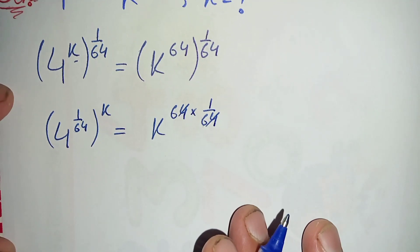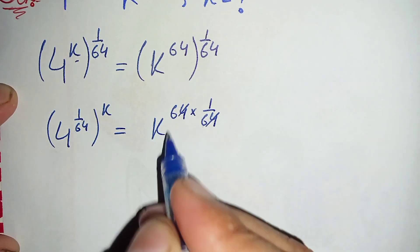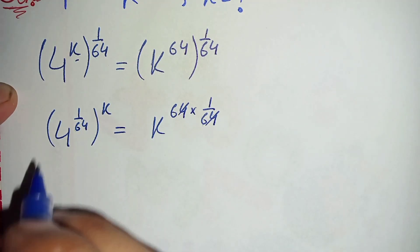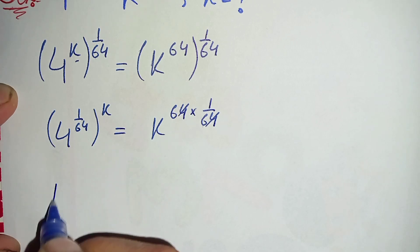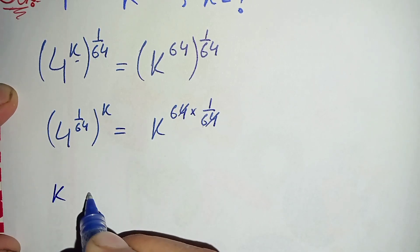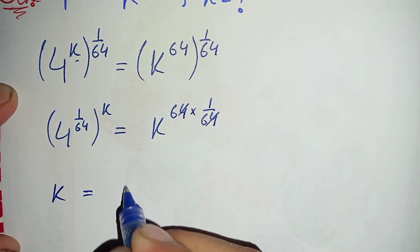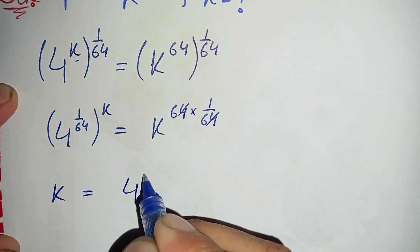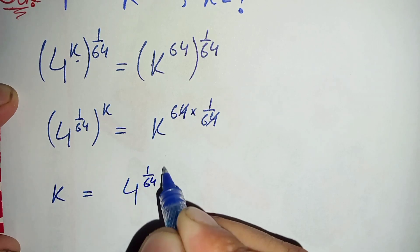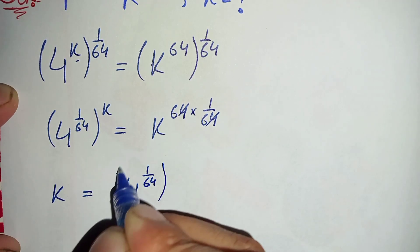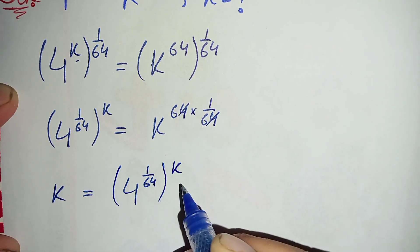So only 1 will be left in the power, giving us k. We can also write this with k on the left hand side: k is equal to 4 raised to power 1 over 64, raised to power k.